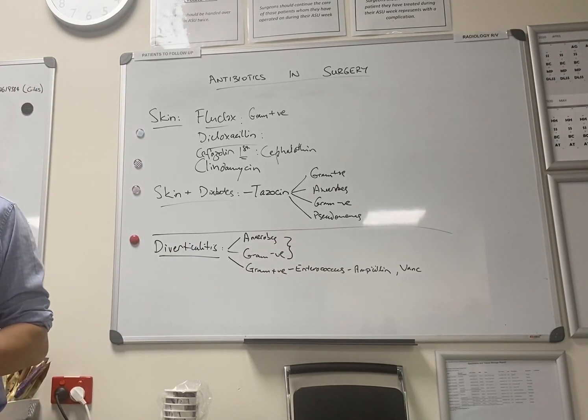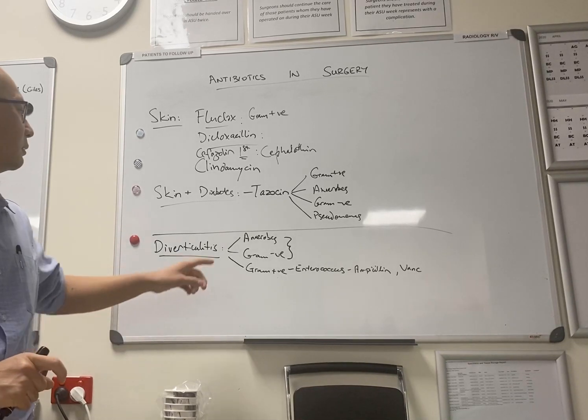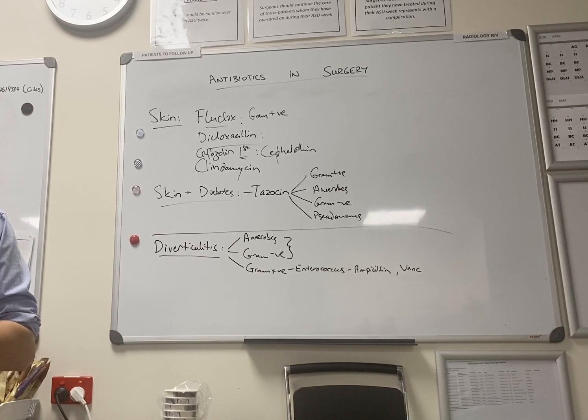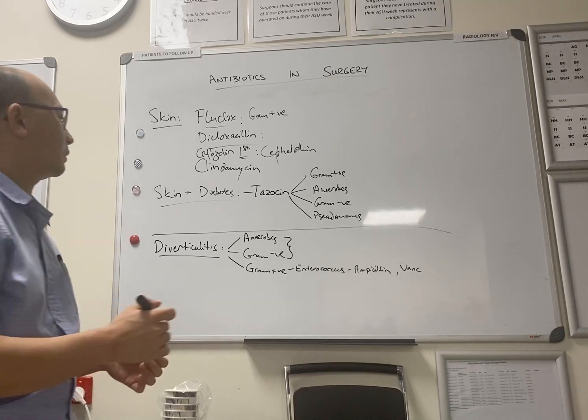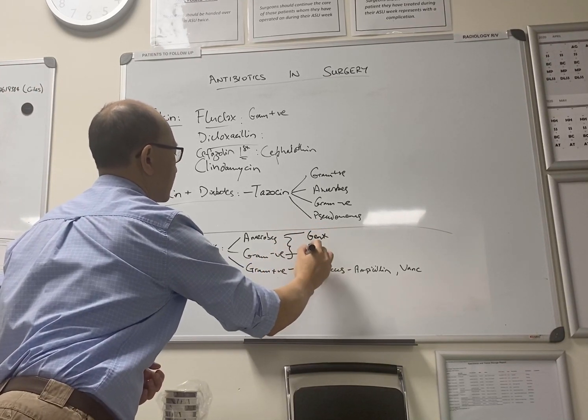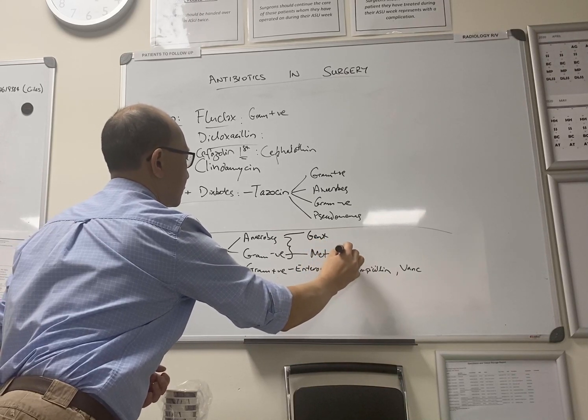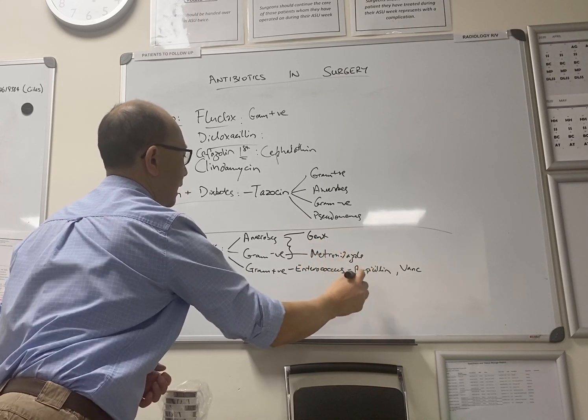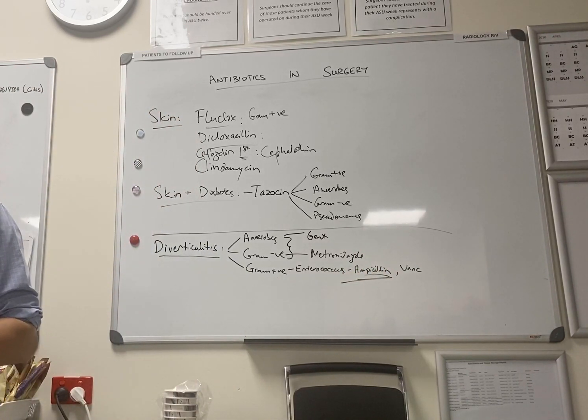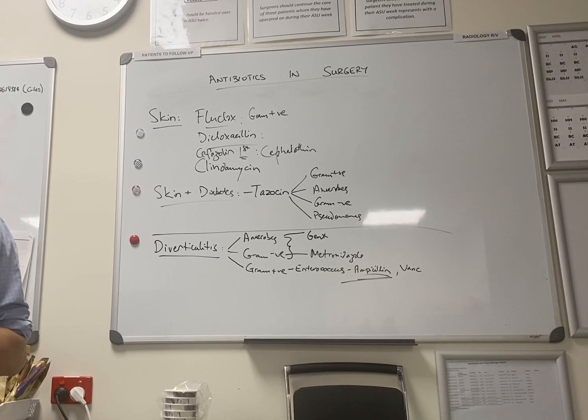So what do the antibiotic guidelines recommend if you've got diverticulitis? To cover ideally all three, but mainly those two. So what's the old-fashioned regime? Yeah. So the gent obviously covers this, the metronidazole covers that, and the ampicillin is supposed to cover this. If you have a penicillin allergy, what do the guidelines recommend? Ceftriaxone.